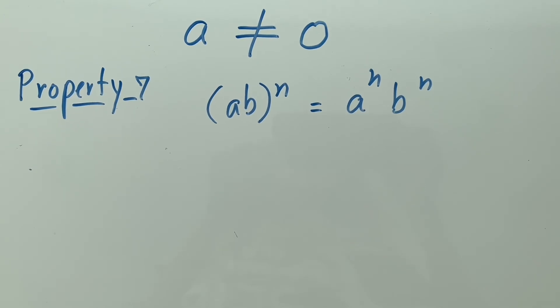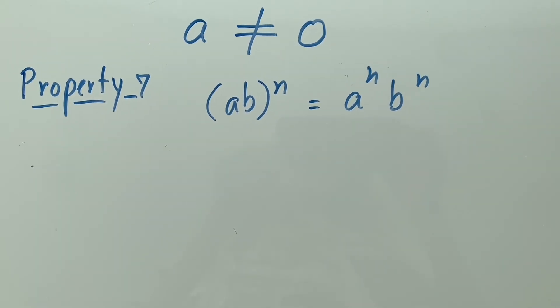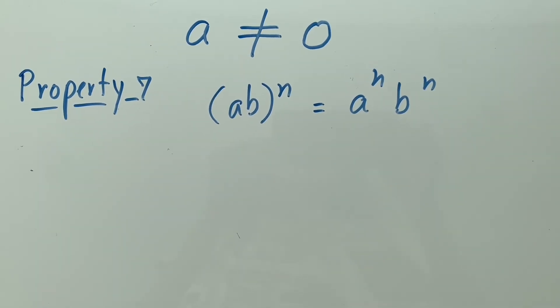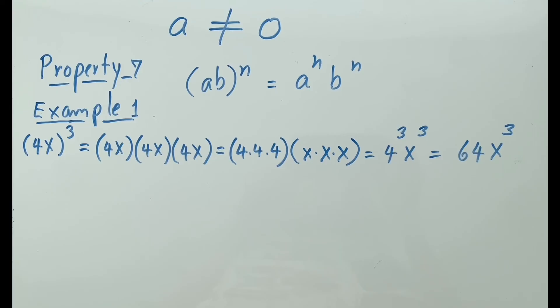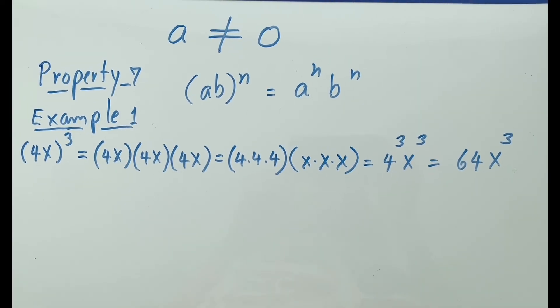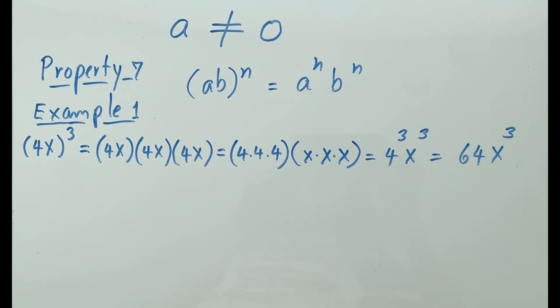Property 7: ab to the n power equals a to the n power, b to the n power. Example: 4x cubed equals 64x cubed.